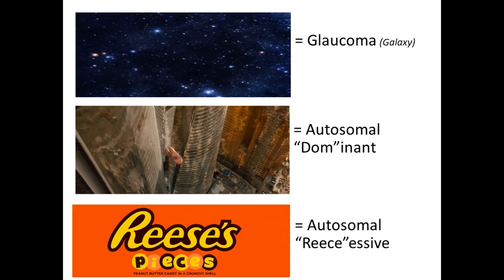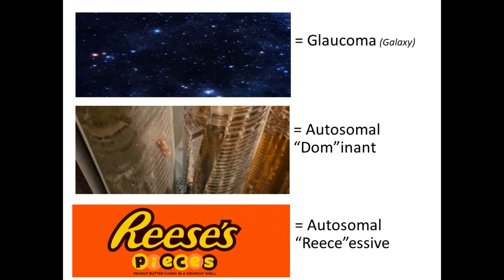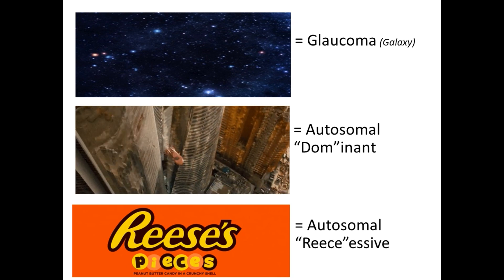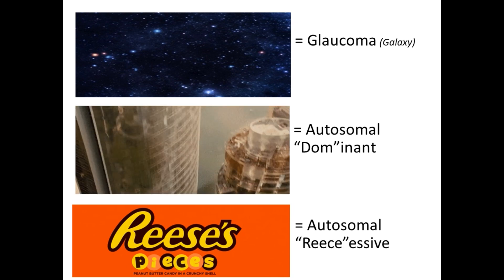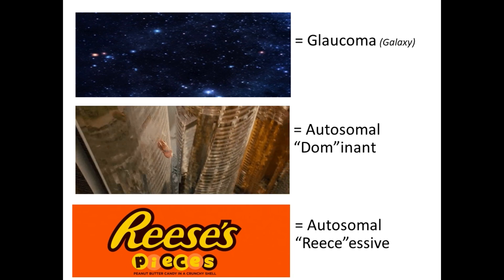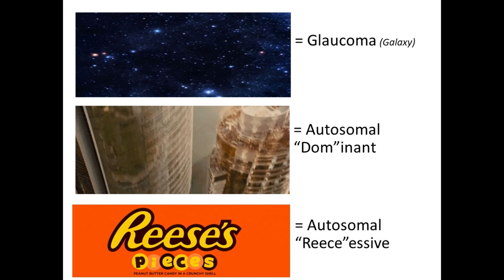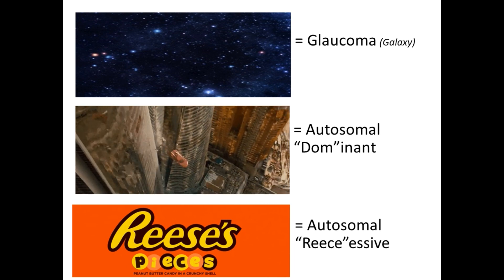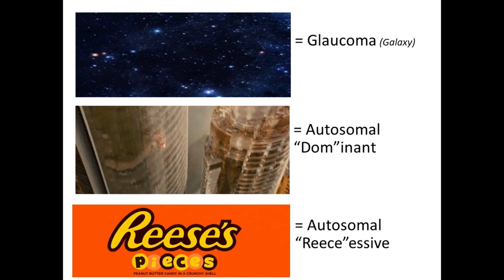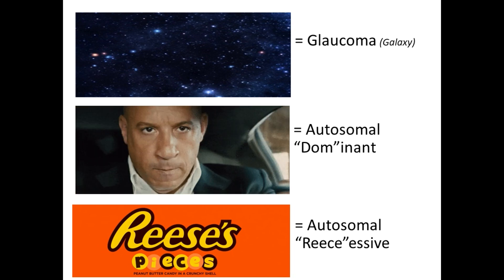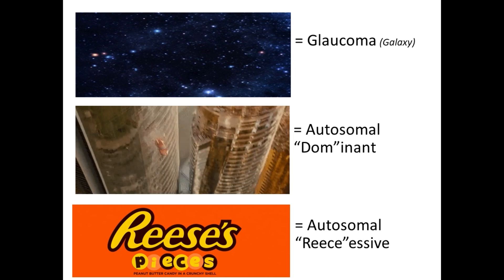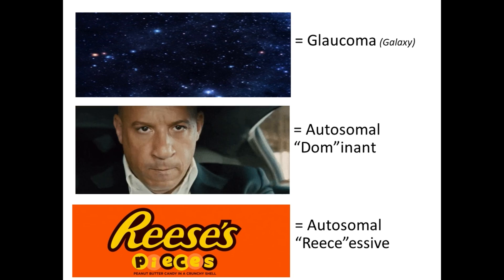As a background, I'll go over some symbols that may pop up in the phacomatosis video. If you see a picture of the galaxy, it represents glaucoma. If you see Dom, a character in Fast and Furious played by Vin Diesel, that helps you remember autosomal dominant. And if you see Reese's Pieces, that reminds you of autosomal recessive.